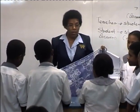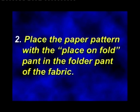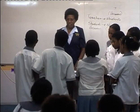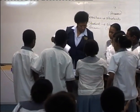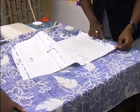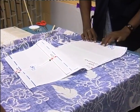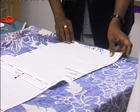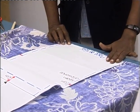If I can have the class to read for us the second step. Place the paper pattern where it says 'place on fold' in the folded part of the fabric. Okay, we have an error there — 'place on fold.' That is the place on fold part, in the folded part of the fabric. So I put the pattern where it says 'place on fold' — it's placed on the fold. That's the folded part of the fabric.